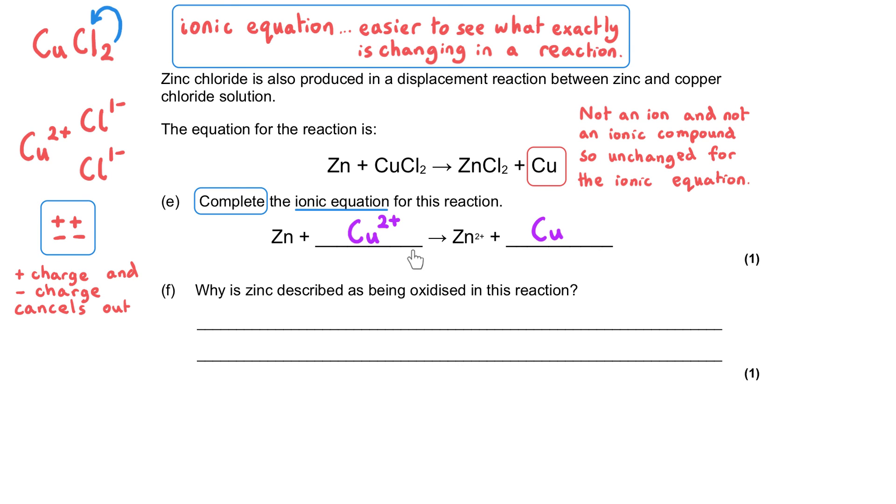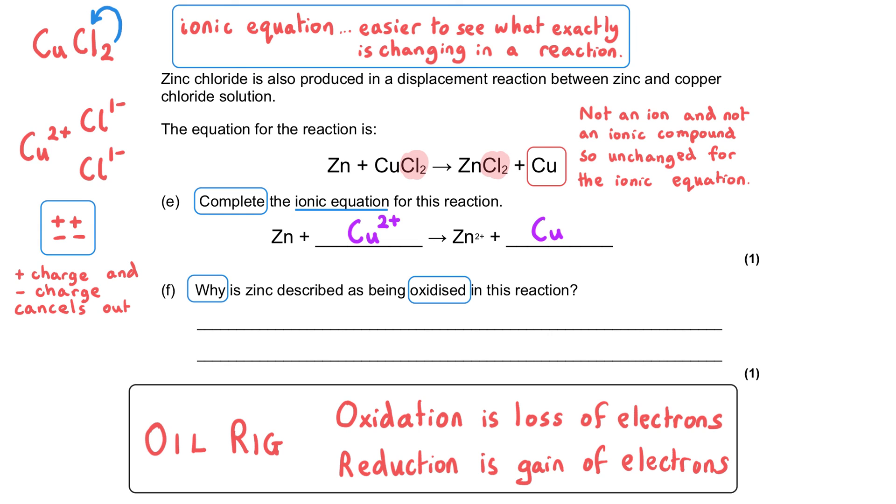That's what we need to put into this space here: copper 2 plus charge. We can see for the ionic equation, the chloride ions are removed because they are not changing. We've been asked why is zinc described as being oxidized in this reaction. In terms of electrons, the acronym OIL RIG is quite useful because this helps us remember that oxidation is the loss of electrons and reduction is gain. Since the zinc has gone from atoms of zinc with no charge to zinc ions with a positive charge, this means the zinc atoms are losing 2 electrons, but actually it would be okay to just say zinc loses electrons.